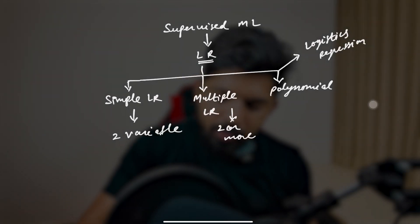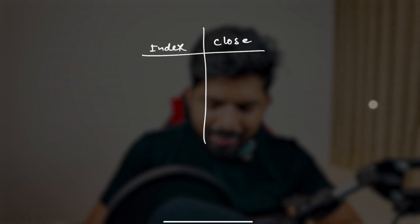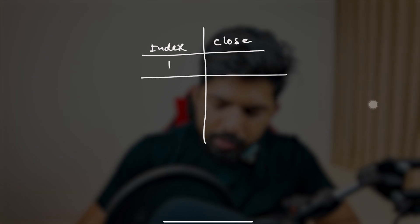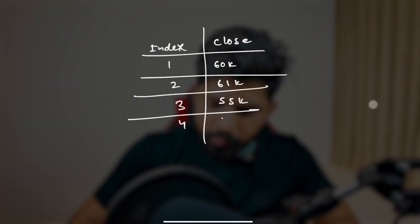For polynomial regression — when the relation between two variables is not linear, we use polynomial regression. We will understand all of these in detail later. For simple linear regression, let's draw an example. We have closing price as output and the index as input. Let's say on day one Bitcoin is 60K, day two 61K, day three 55K, day four 58K, and day five 60K again.